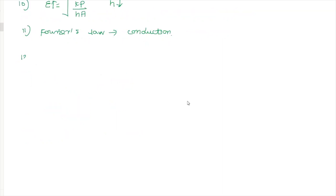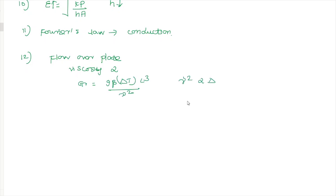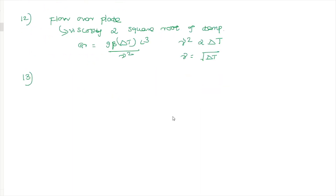Looking at flow over a flat plate — this is a convection topic. The boundary layer thickness (δ) is related to temperature. Viscosity is proportional to temperature, and more specifically, the boundary layer thickness (δ) is proportional to the square root of the temperature: δ ∝ √T.